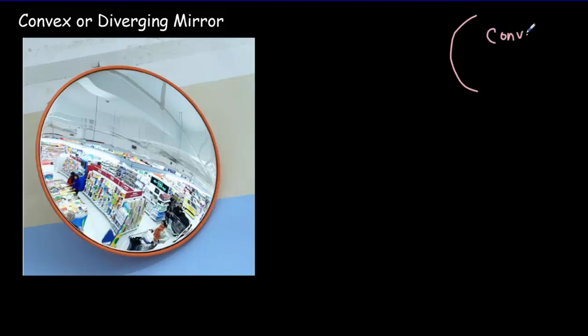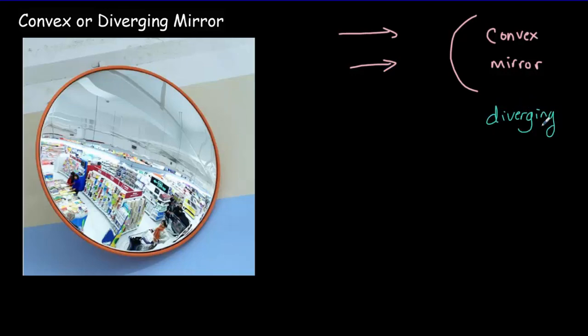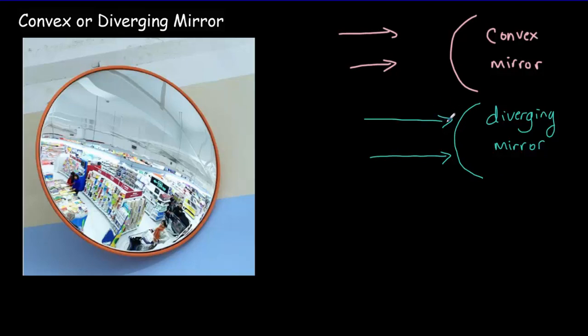A mirror could curve in one of two ways. It can either bulge outwards, and in that case we call this a convex mirror. It's also called a diverging mirror, because when things diverge they get farther apart. If we consider the rays striking a convex mirror, this ray here would reflect in approximately this direction, and this ray here would reflect in approximately this direction. So we can see that these two reflected rays are diverging — they're getting farther and farther apart.